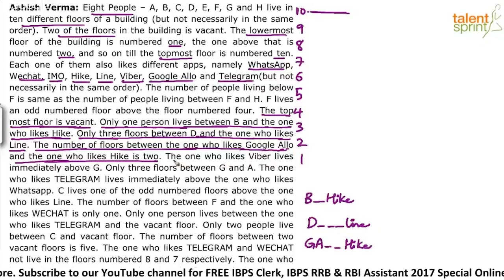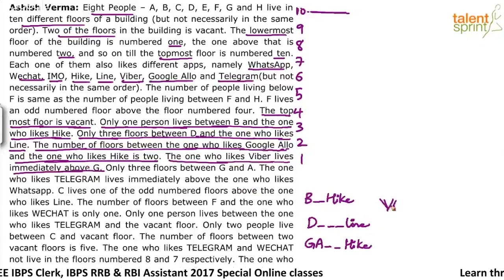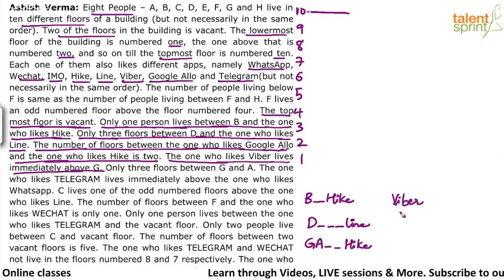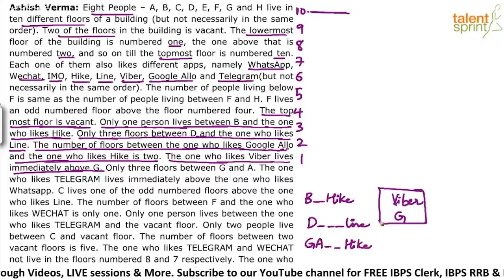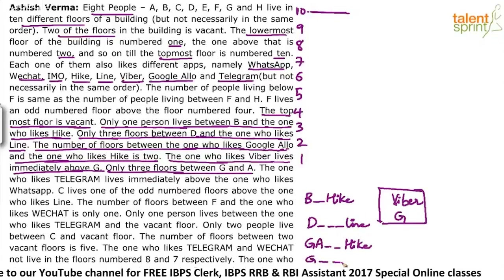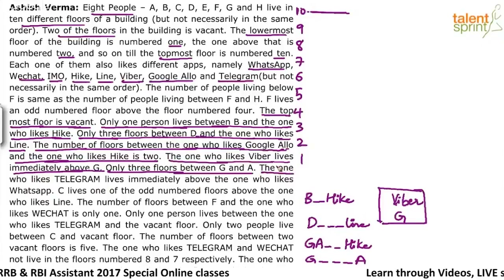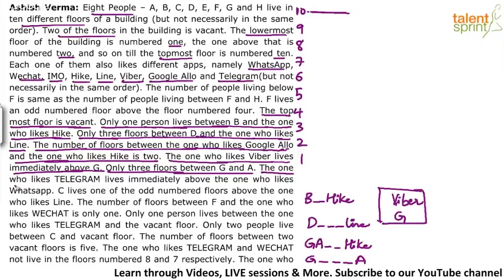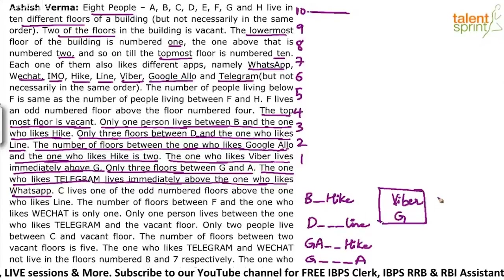The one who likes Viber lives immediately above G, so Viber is immediately above G. Only three floors between G and A: G — — — A. The one who likes Telegram lives immediately above the one who likes WhatsApp, so Telegram is immediately above WhatsApp. These clues will come together when we start filling in the arrangement.